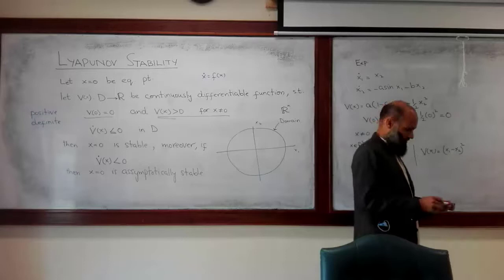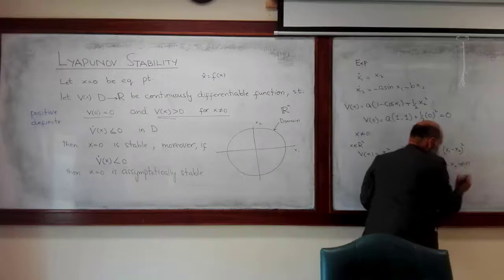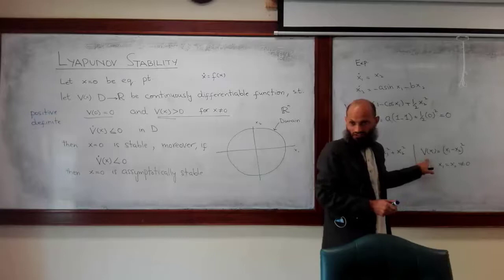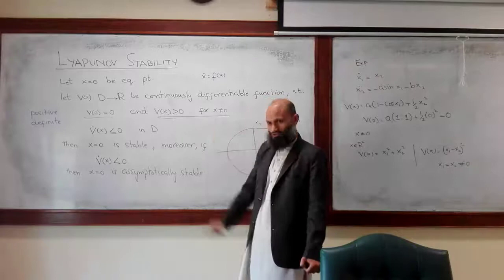What about the function (x1 − x2)²? For x1 = x2 with x ≠ 0, this function is still 0. So this is not positive definite — it must be greater than 0 for all x ≠ 0.